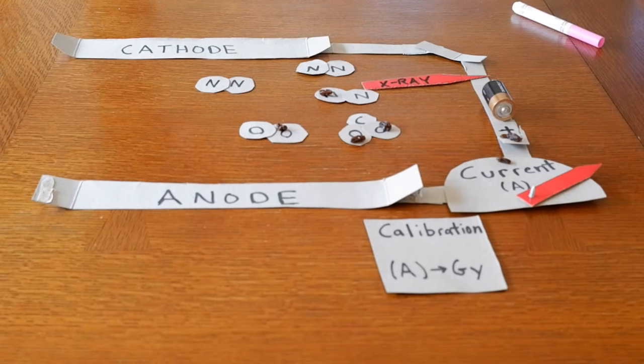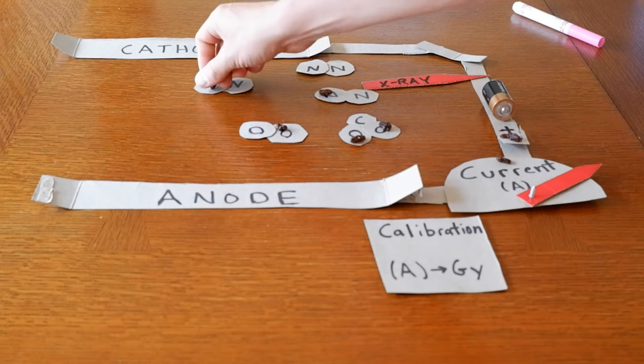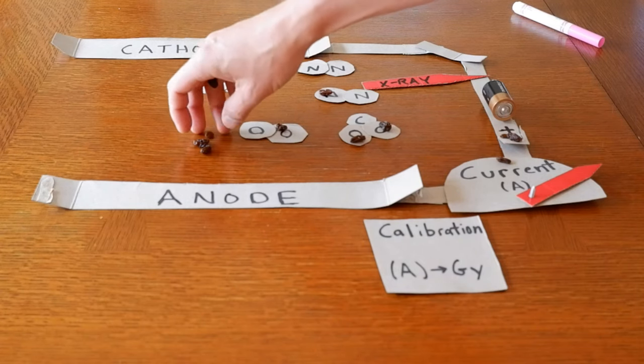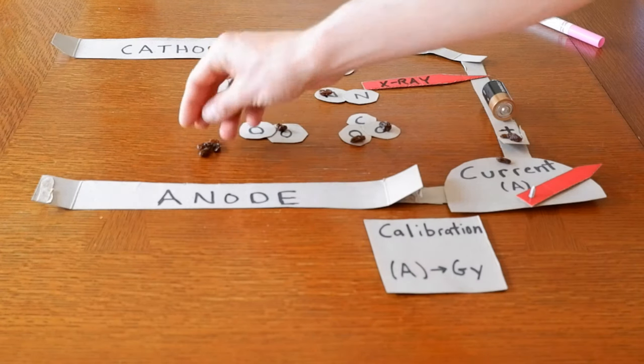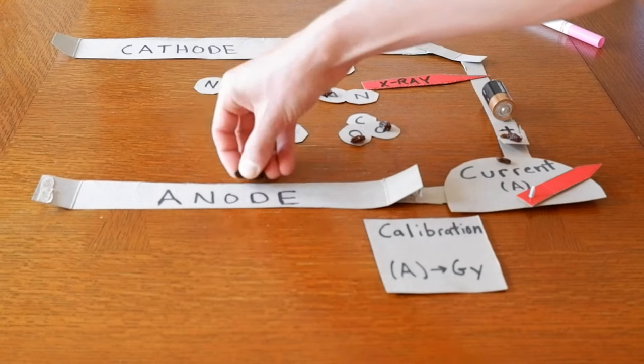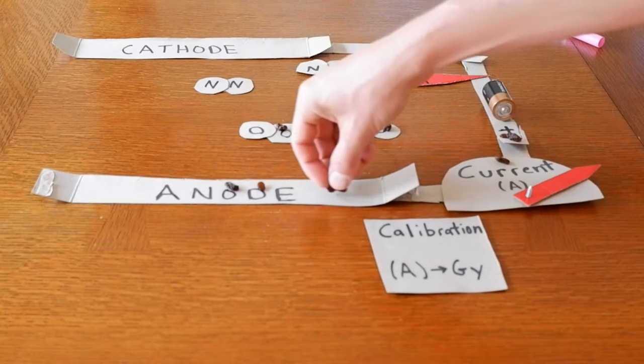In this case, if you had one electron coming through, that could lead to multiple electrons coming out of the gas.